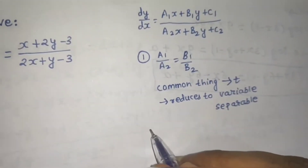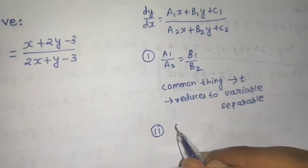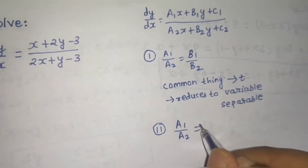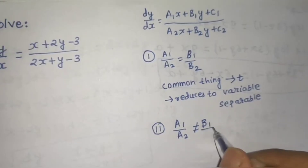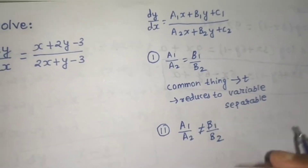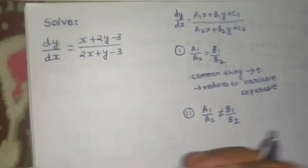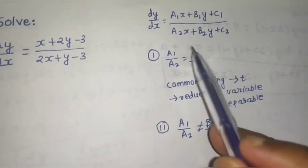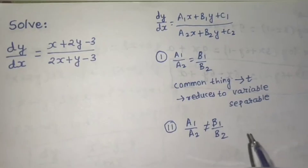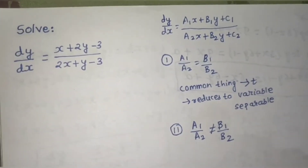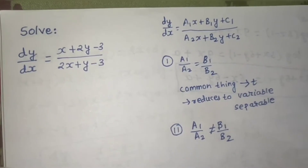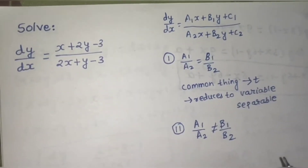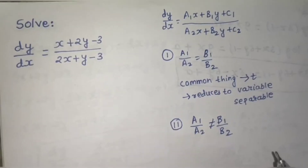The second type of problem is when a1/a2 is not equal to b1/b2. We will discuss what to do in this case using this question. For type one, I have already done a problem — you can find it in my ordinary differential equation playlist. If you can't find it, comment below and I will give you the link.